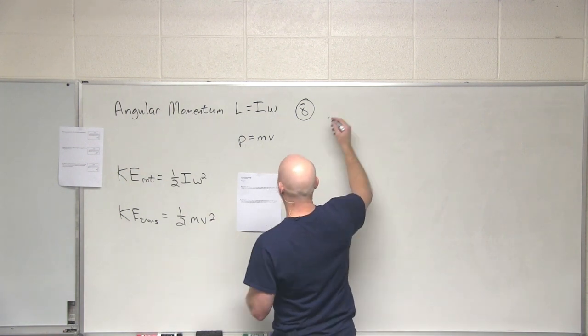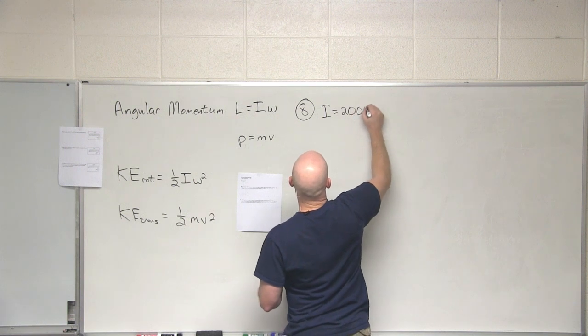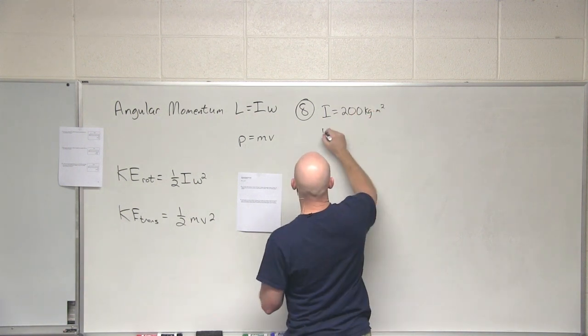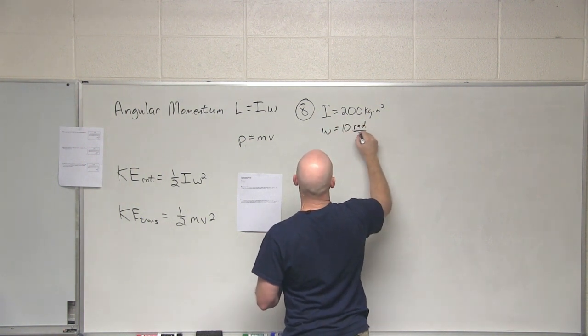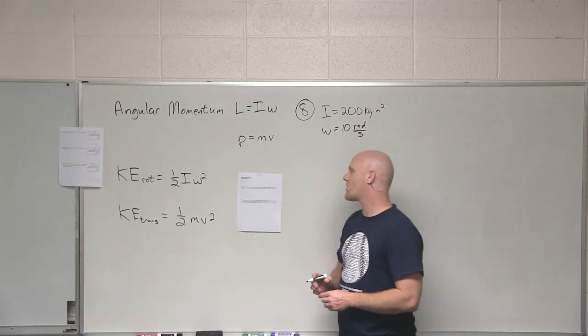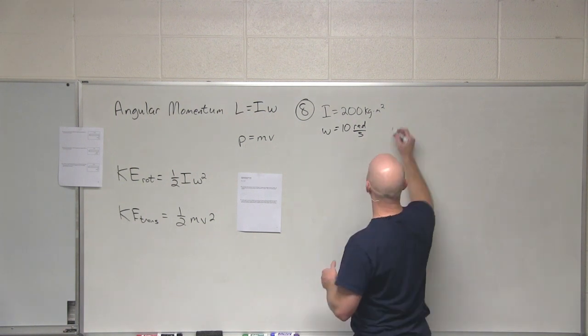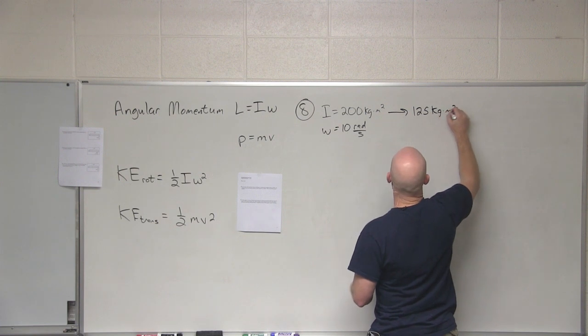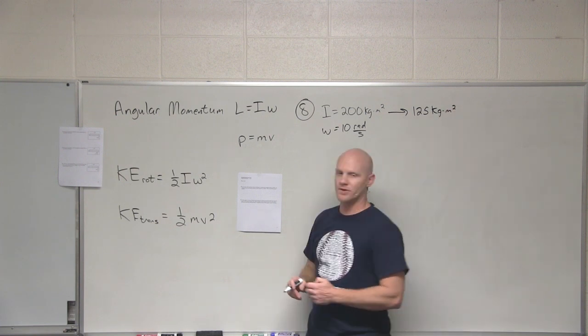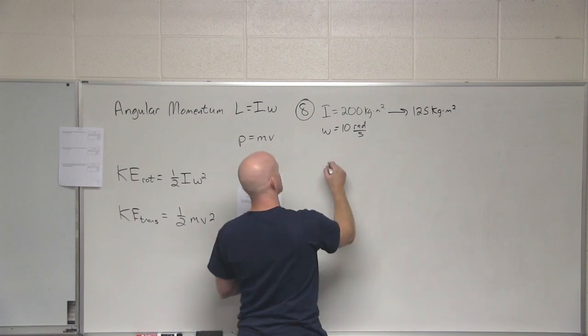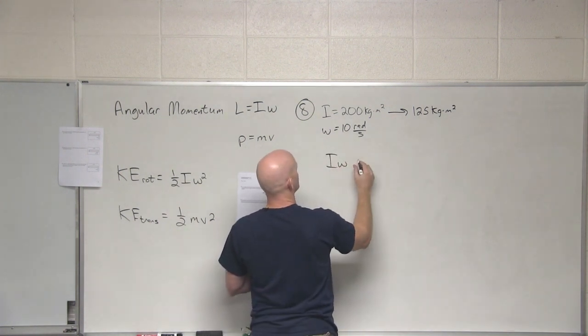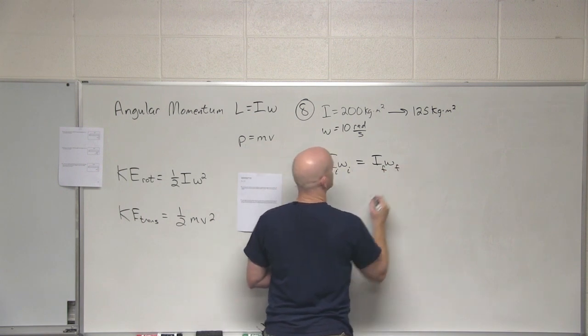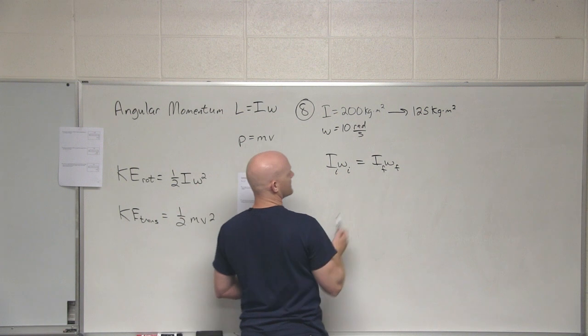So in this case, ice skater with a moment of inertia of 200 kilogram meter squared, angular velocity is 10 radians per second. By tucking in her arms and legs, her moment of inertia increases to 125 kilogram meter squared. And the question is, what is her resulting angular velocity? And essentially, we're just going to say conservation of angular momentum. I omega initial equals I omega final.